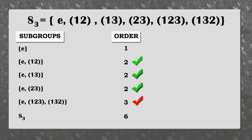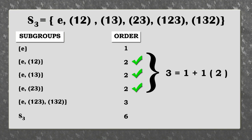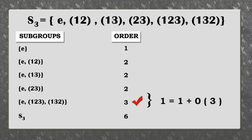Let's break it down even further. The number of Sylow 2-subgroups is one plus a multiple of two, which divides the order of the group. While the number of Sylow 3-subgroups is one plus a multiple of three, which again divides the order of the group.